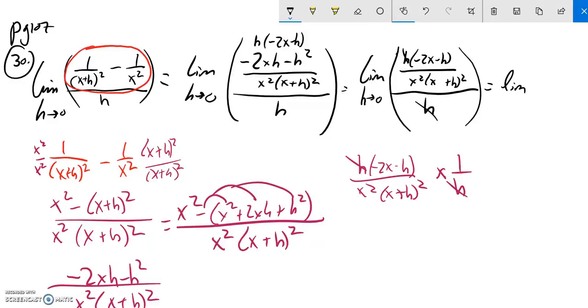So I have limit as h approaches 0 of negative 2x minus h over x squared times (x + h) squared. I'm going to make a little space down here. Because now notice if I plug in 0 for h, I'm not dividing by 0 anymore. I'm good on my direct substitution. So I'm going to plug in 0 for h and see what happens.